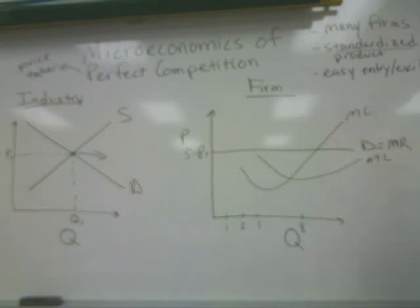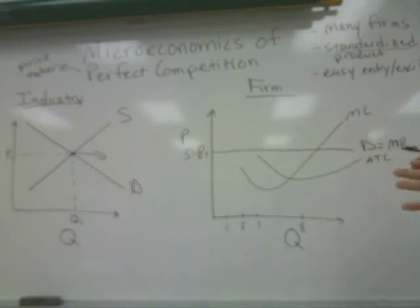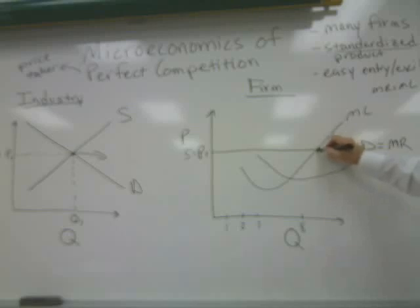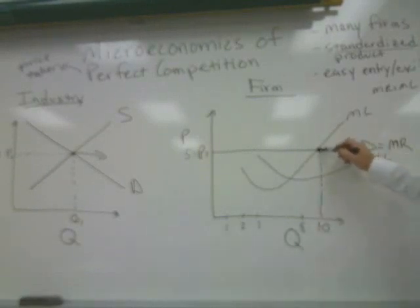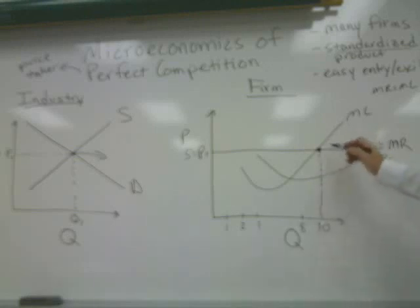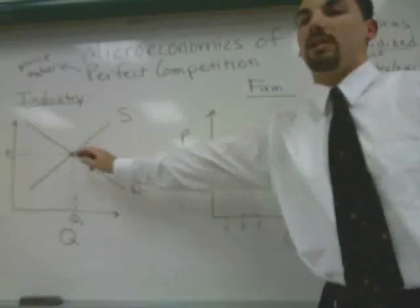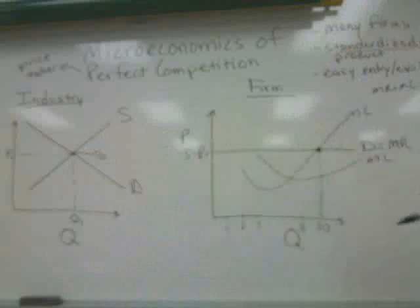We're now developing our picture for equilibrium in the perfectly competitive market. The profit-maximizing rule is always the same: marginal revenue equals marginal cost. Where the MC and MR curves intersect dictates the profit-maximizing level of output — let's call it 10 units. The firm will charge the $5 equilibrium price that was determined by the industry curves, since the firm is the price taker.